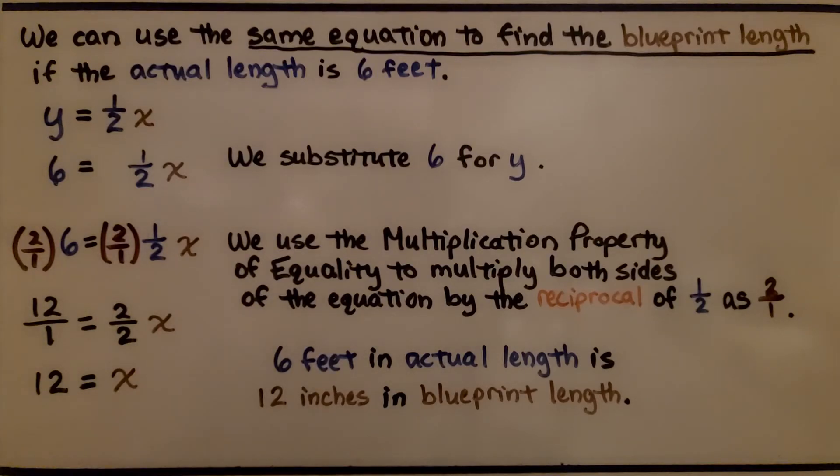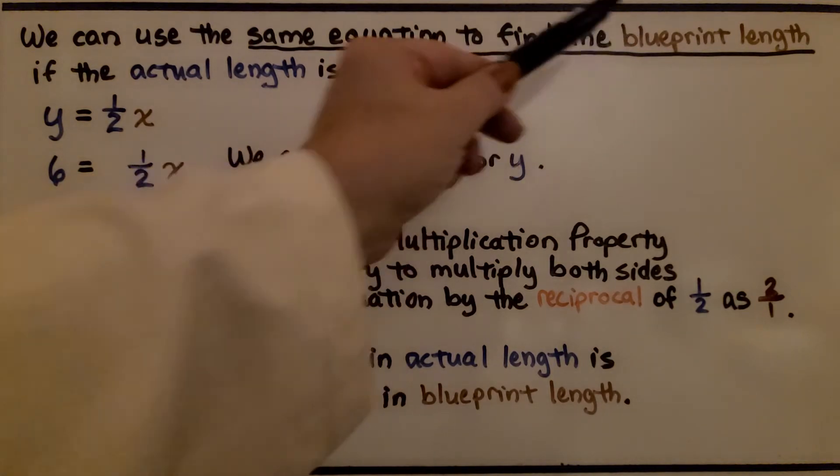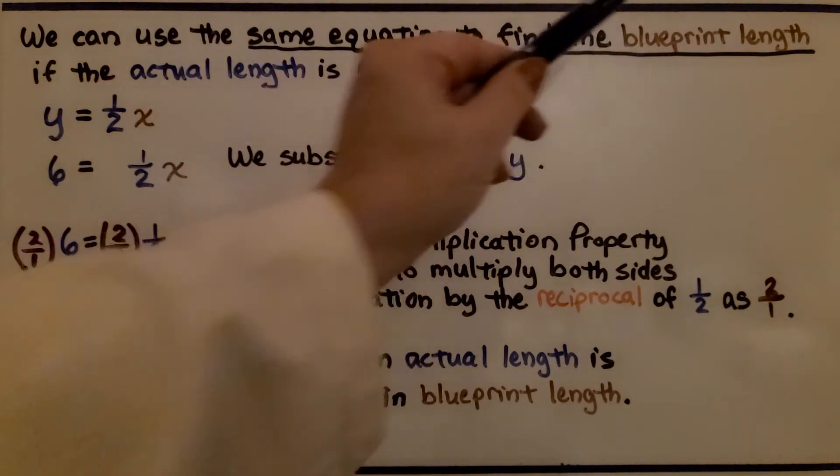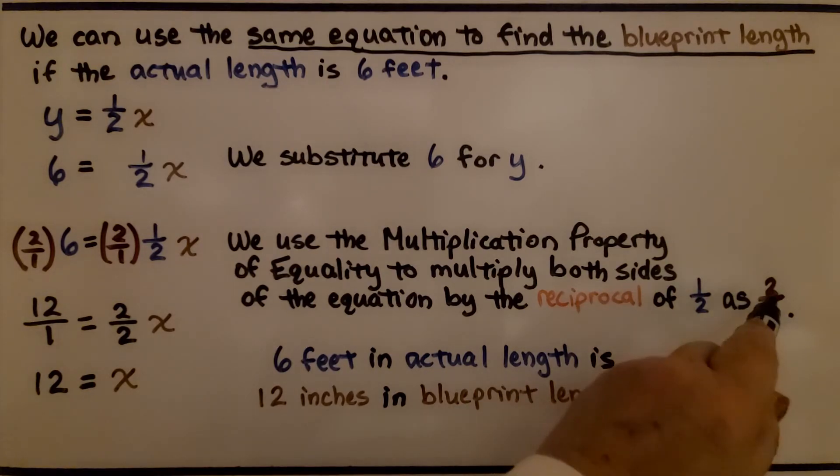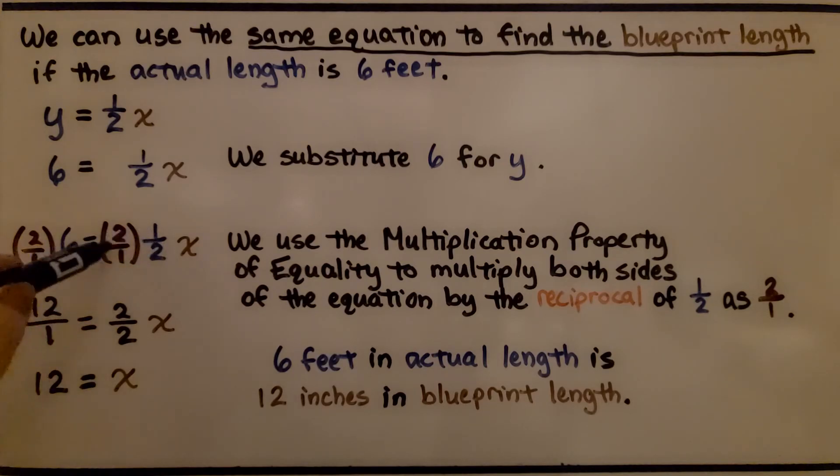We can use the same equation to find the blueprint length if the actual length is 6 feet. Before, we were given the blueprint length and we had to find the actual length. Now, we need to find the blueprint length and they're giving us the actual length. So we're using y is equal to one half x. We just substitute 6 for y. We know that's 6 feet. Now we have 6 is equal to half x. We use the multiplication property of equality to multiply both sides of the equation by the reciprocal of one half as 2 over 1. Remember, the reciprocal is the flipped upside down version of the fraction.